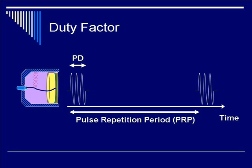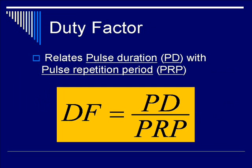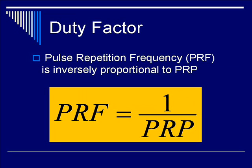Since pulse duration describes how long the pulse lasts, we can define duty factor as PD (pulse duration) divided by PRP (pulse repetition period). So duty factor DF = PD / PRP. Alternatively, there is a term PRF — pulse repetition frequency — which is inversely proportional to PRP.